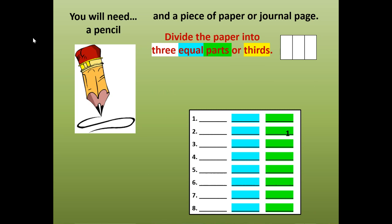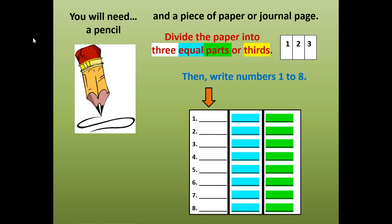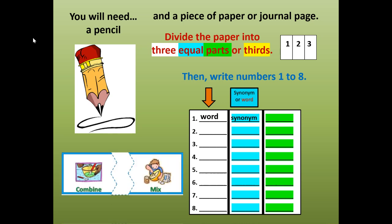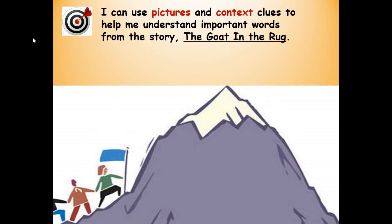You're going to divide the paper into three equal parts — one, two, three, or thirds. Then you're going to write your numbers one to eight. For each number, you're going to write a vocabulary word. In the second column, you're going to write the synonym for that word. A synonym means a word that means the same, just like combine is a synonym for mix. If you don't catch the synonym, you can always write the word a second time. In the third column, draw a quick picture or sketch to help you remember the word. Here's our first learning target: I can use pictures and context clues to help me understand important words from the story, The Goat in the Rug.